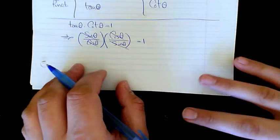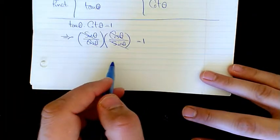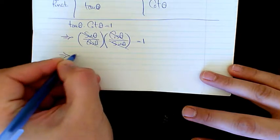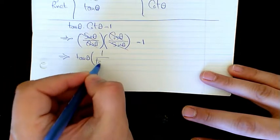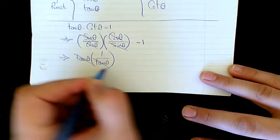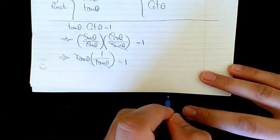As you see here, there is another form to do that. We have tan theta, and cotan is the inverse of tan, so I write it like that. These two cancel out, the answer is going to be 1.